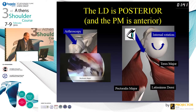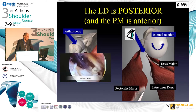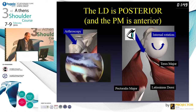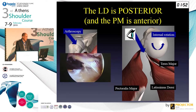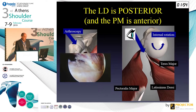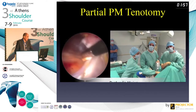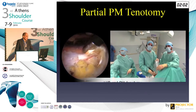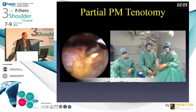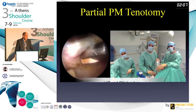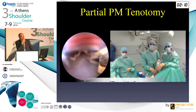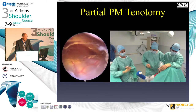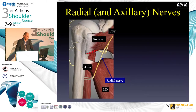In the arthroscopic view, you can see the pec major anteriorly - you have to go through under the pec major, and if you go posteriorly you can see the radial nerve, which indicates the direction you need to follow. You then follow the bicipital groove. You have to treat the biceps, and you can cut the upper part of the pec major just like when you make a shoulder prosthesis, because this increases the space and makes the dissection easier.